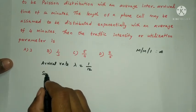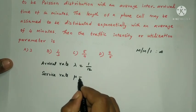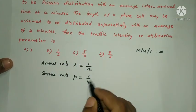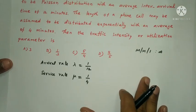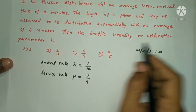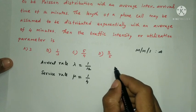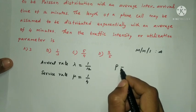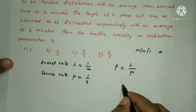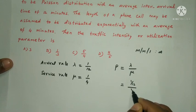The service rate mu = 1/4 (since average service time is 4 minutes). The traffic intensity (utilization parameter), rho = lambda / mu = (1/12) / (1/4).